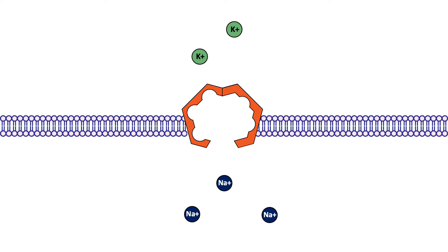As ions move across the membrane, both at rest and when the neuron is active, the concentrations of ions inside and outside of the cell would change. This would lead to changes in the electrochemical gradients that are driving ion movement. The sodium-potassium pump is the key. It is embedded in the cell membrane and uses ATP to move sodium out of the cell and potassium into the cell, maintaining the electrochemical gradients necessary for proper neuron functioning.